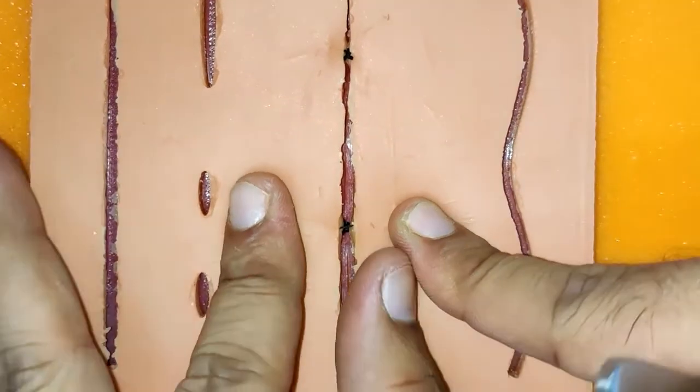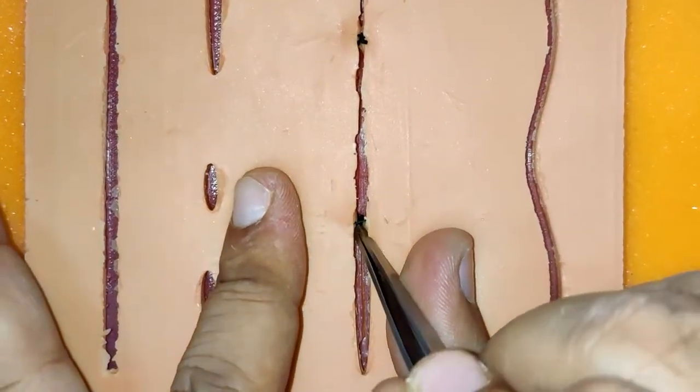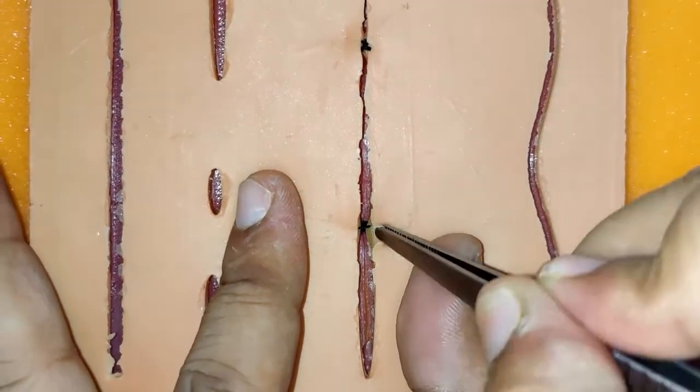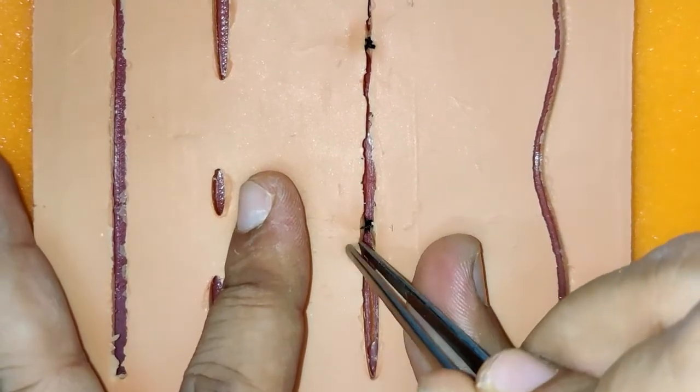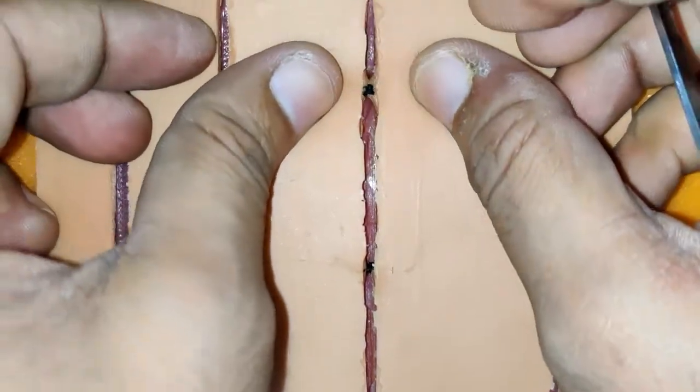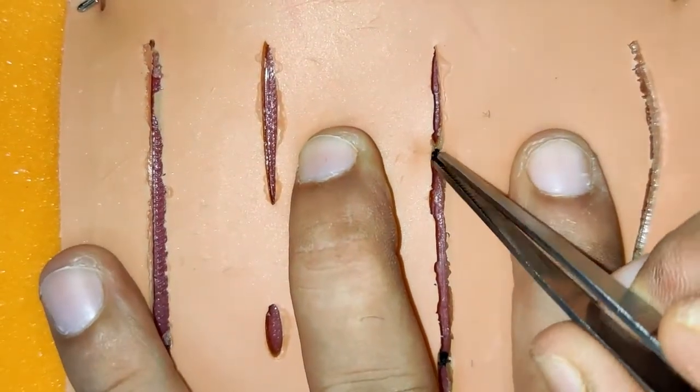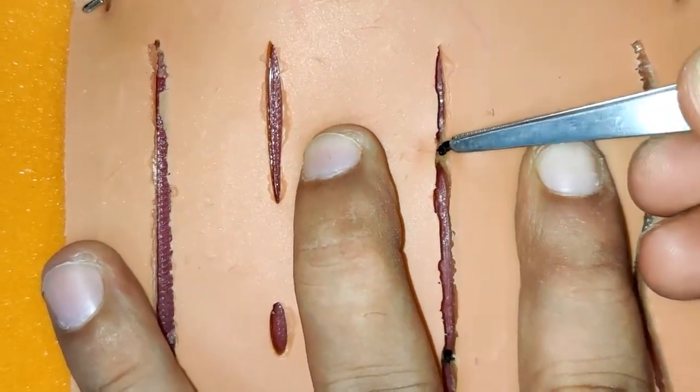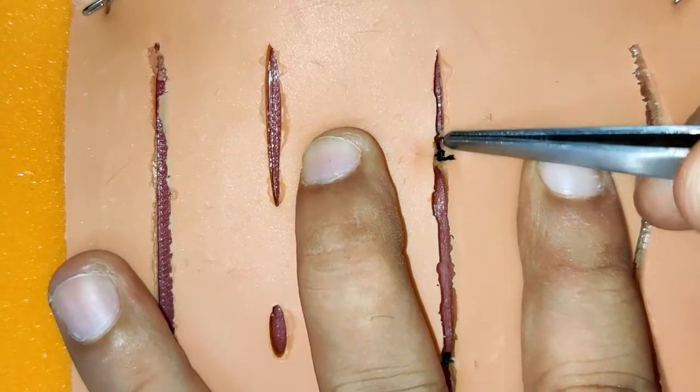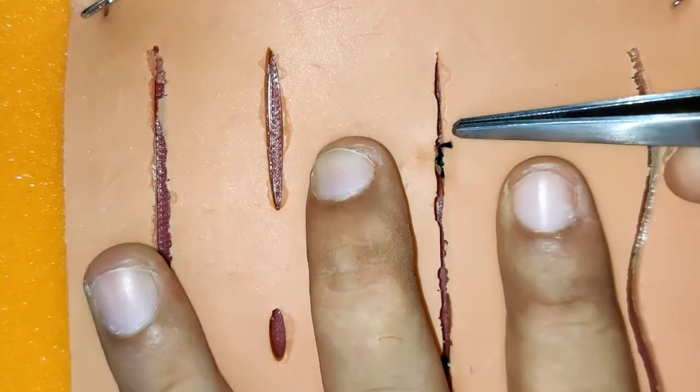So here you can see the difference between the two. When you split this up, you can see the thread. There is nothing that is coming onto the skin, whereas here when you pull this apart, you can see there is a knot which is sitting up just below the skin edges, so it becomes difficult.